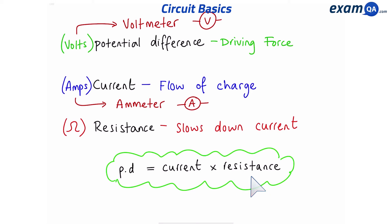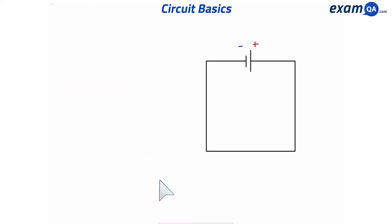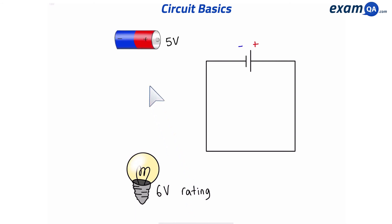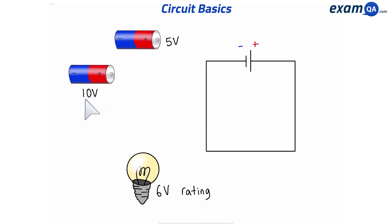If you know potential difference and current, rearrange the equation to work out resistance. Here I have a circuit and I want to attach a bulb with a 6-volt rating — I want it to be as bright as possible. I have three cells available: one with a 5-volt rating, one with a 10-volt rating, and one with a 4-volt rating.